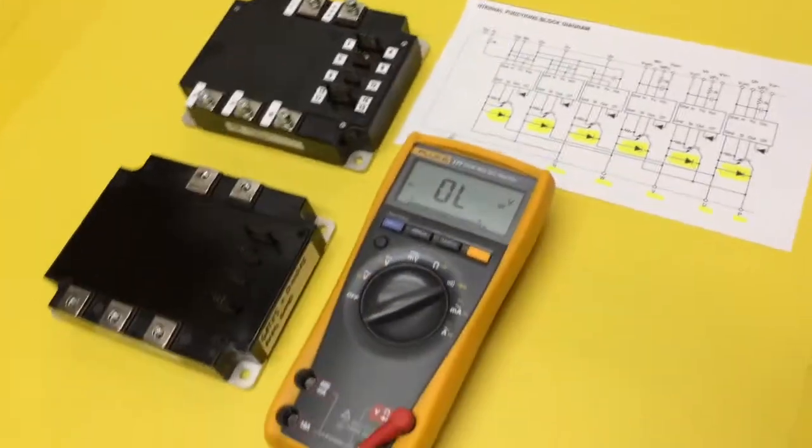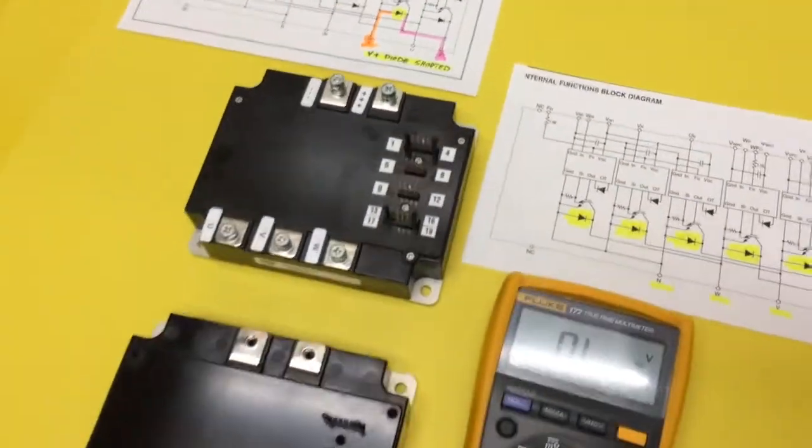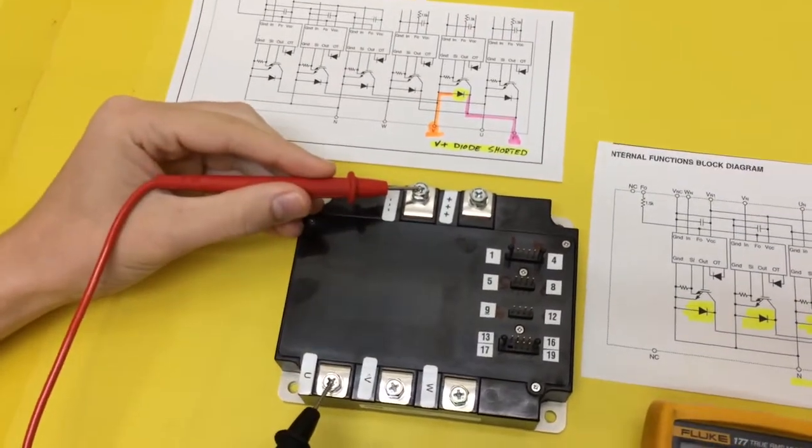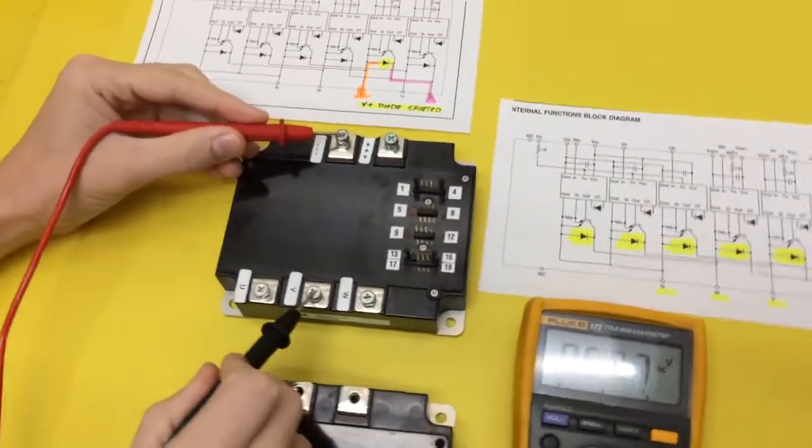Now we're going to take a look at one that does have a shorted diode. So do the same exact test and we'll see without having a schematic you can just see the odd one out. It's going to be the problem.